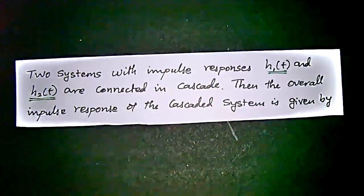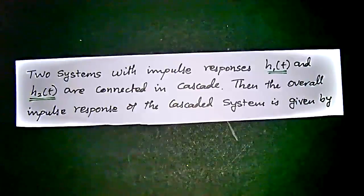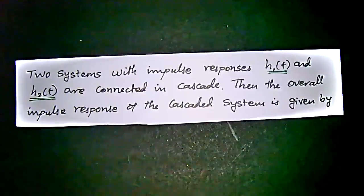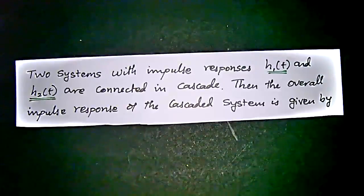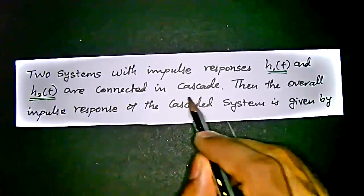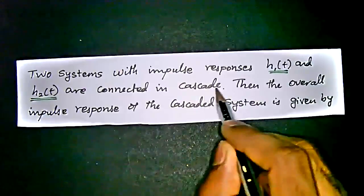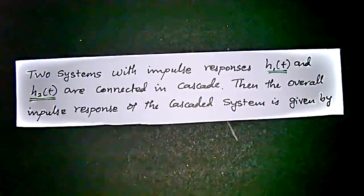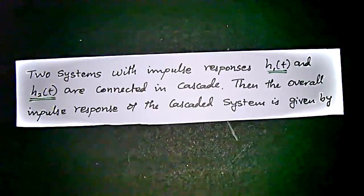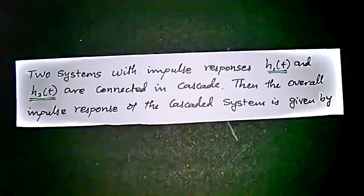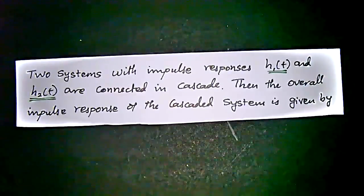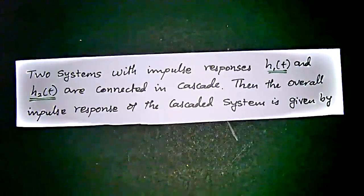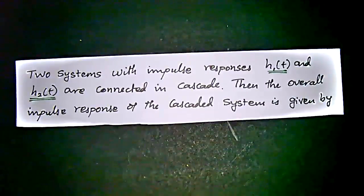Hi, the question here is: two systems with impulse responses h₁(t) and h₂(t) are connected in cascade. Then the overall impulse response of the cascade system is given by - this is how we have to find the value for these.